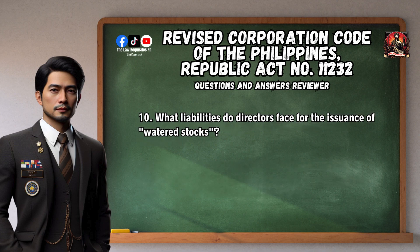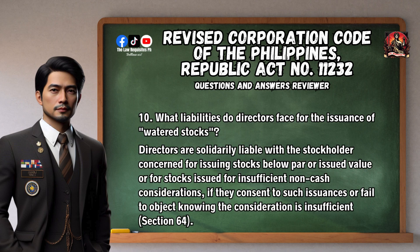Question 10: What liabilities do directors face for the issuance of watered stocks? Directors are solidarily liable with the stockholder concerned for issuing stocks below par or issued value, or for stocks issued for insufficient non-cash considerations, if they consent to such issuances or fail to object knowing the consideration is insufficient. Section 64.